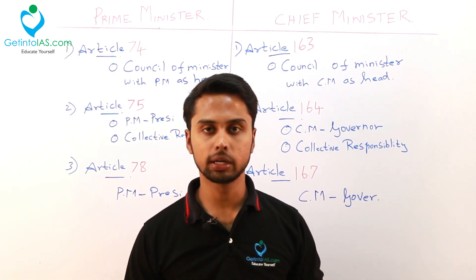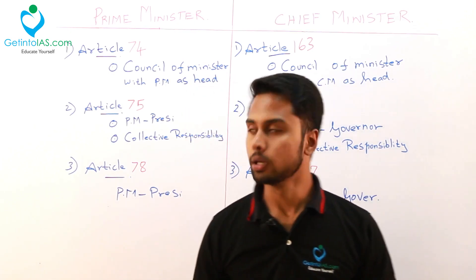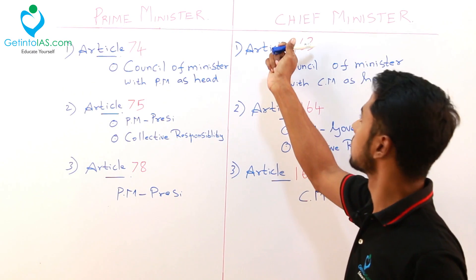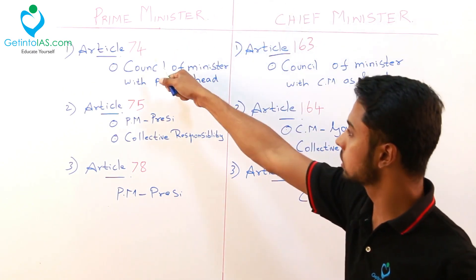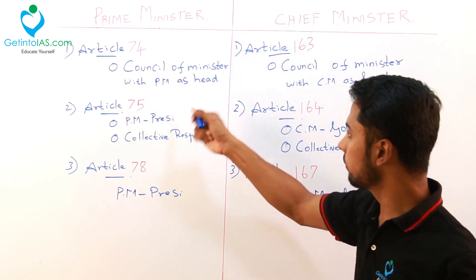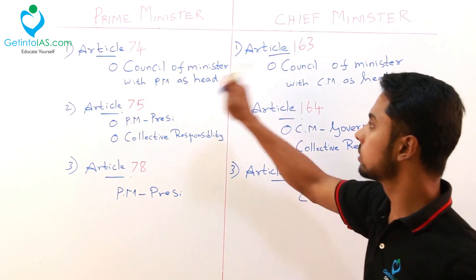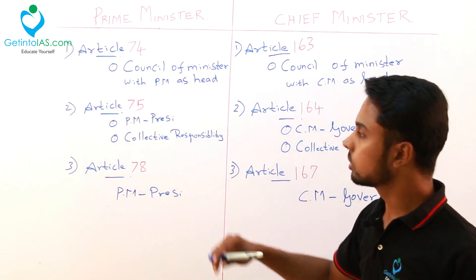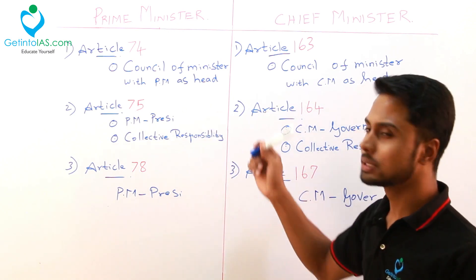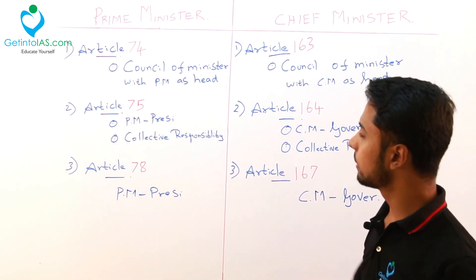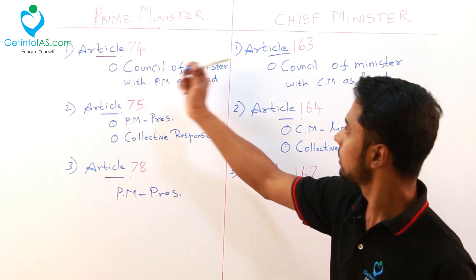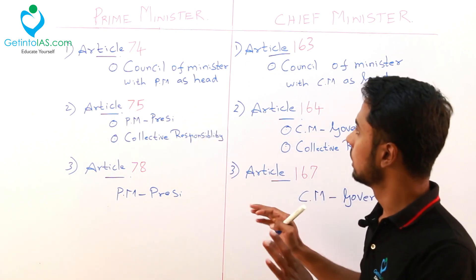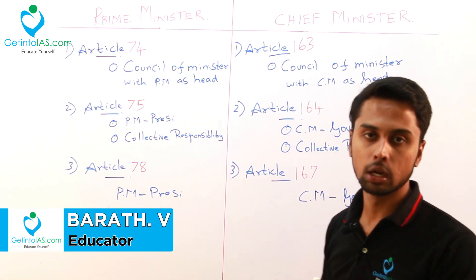We are going to study the next topic in polity which is the prime minister and chief minister. This is union executive and this is state executive. Why we are comparing this union executive and state executive is because both are similar powers only. Similar powers only but the article number is only changing, so we are studying in a similar way.